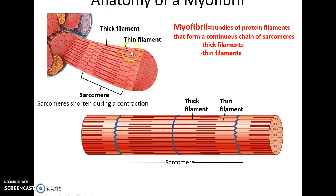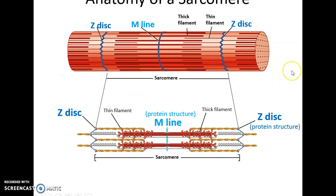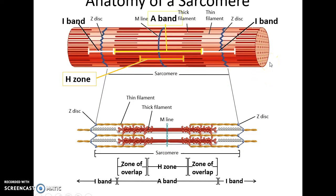Myofibrils are made up of two kinds of protein filaments: thick filaments and thin filaments, arranged in units called sarcomeres. A sarcomere has structures at its ends called Z-discs, which attach it to neighboring sarcomeres, and an M-line in the very middle. Thick filaments attach to the M-lines; thin filaments attach to the Z-discs. The region containing thick filaments is called the A band, the region with only thin filaments is the I band, and the region with only thick filaments is the H zone.